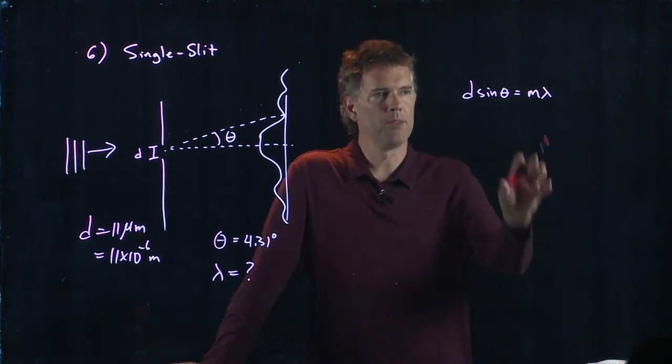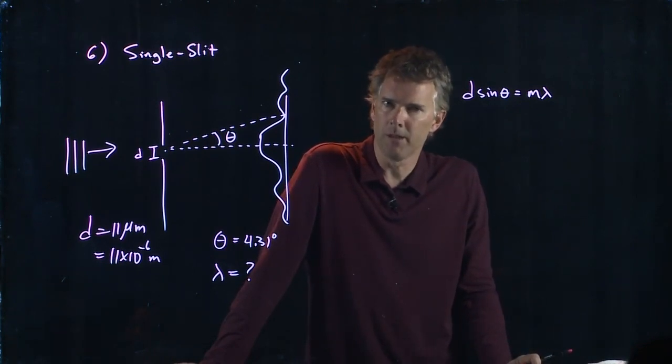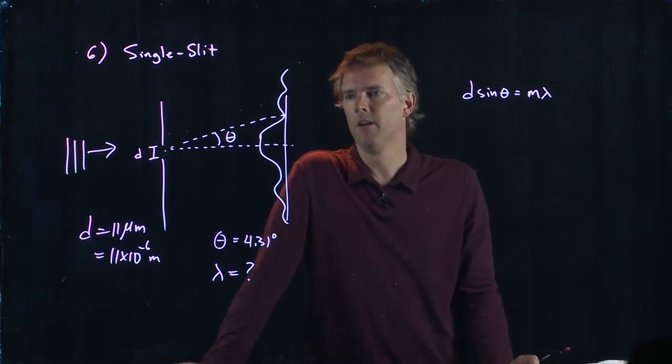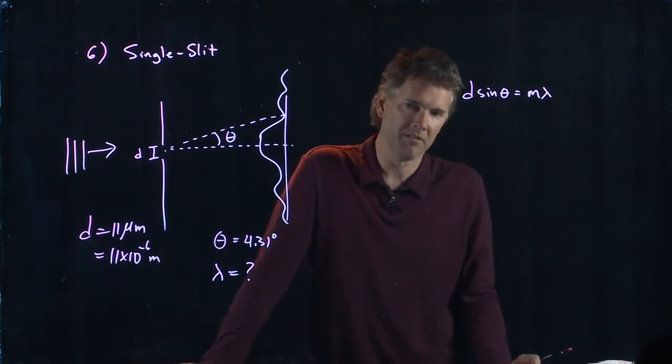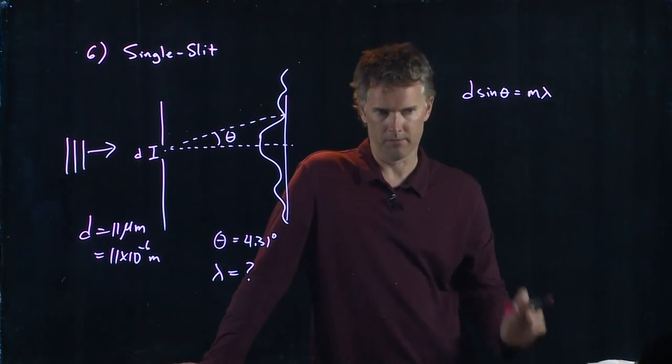But this equation that you just told me, that was for the bright fringe from a double slit, right? And now we have the dark fringe from a single slit. So is this equation the same, or is it something else?